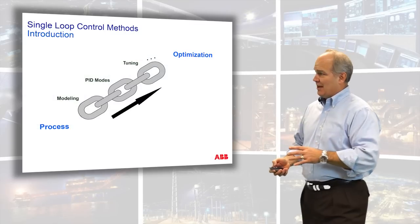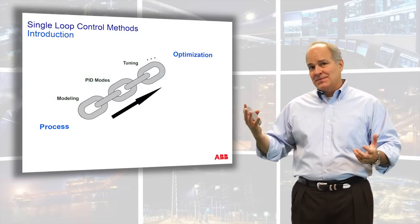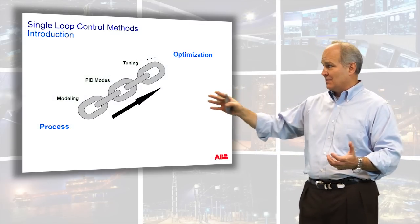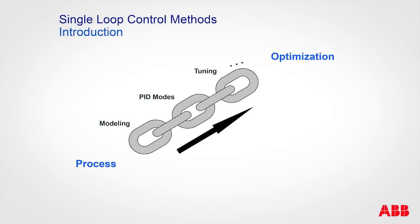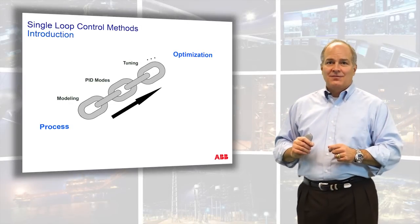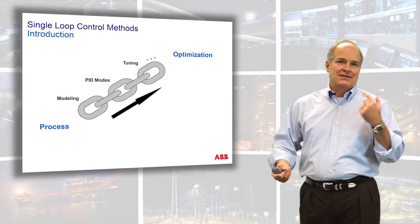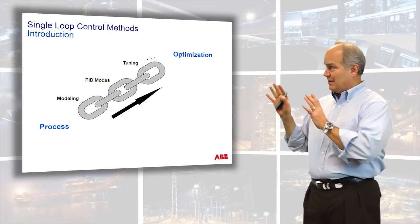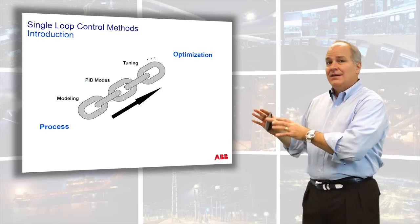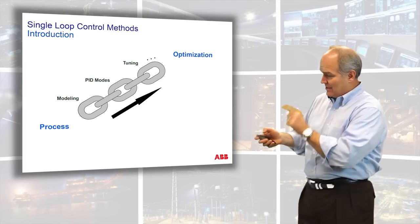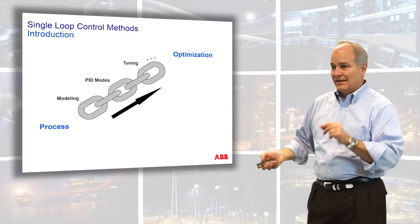There are several links in the chain that relate a process to optimization. They go through several phases from modeling to PID modes — standard, parallel, and classical are the three very general classifications. We're going to talk about that in a later chapter. Then we get into tuning — that's where everybody wants to get to, whether it's Ziegler-Nichols, PODA, Lambda, Direct Synthesis, Overshoot, or whatever you want. But you can't get to any of these steps if you skip process modeling, and that's what we're going to cover.